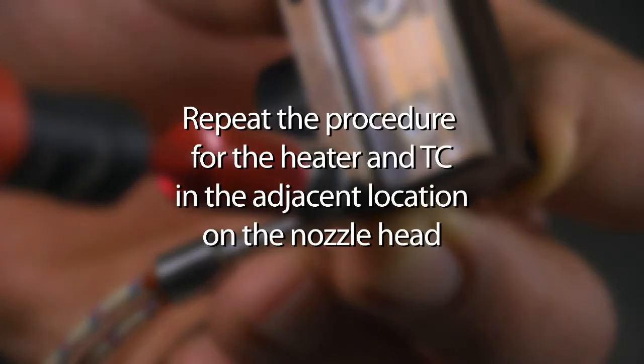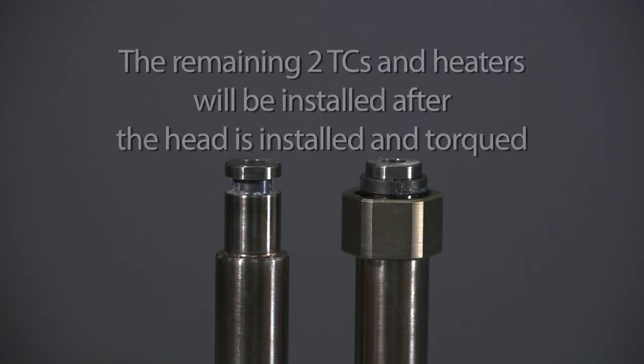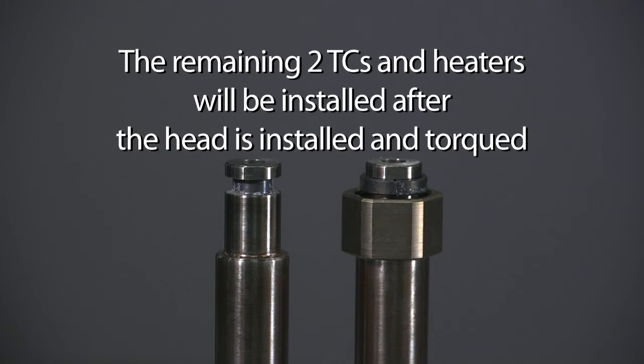We would do the same for the heater and TC in the adjacent location on the nozzle head. At this point, we are ready to install the nozzle head onto the housing. We will leave the remaining two TC's and heaters until the head is installed and torqued.